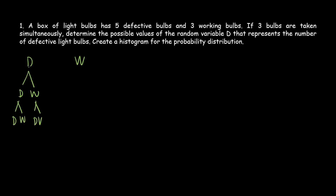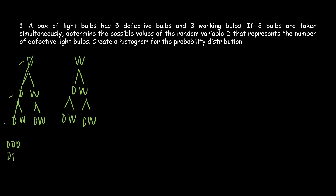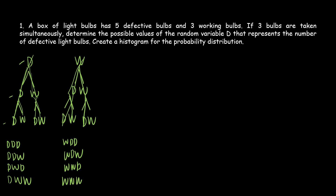So the possible outcomes are: DDD, DDW, DWW, and WWW. Since it says three bulbs are taken simultaneously and D represents the number of defective bulbs, we count the D's in each outcome.